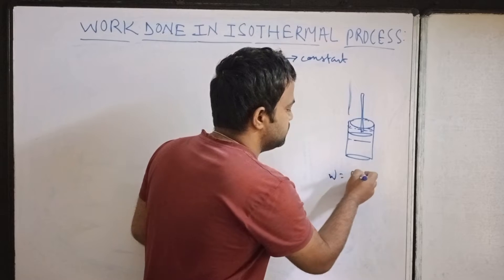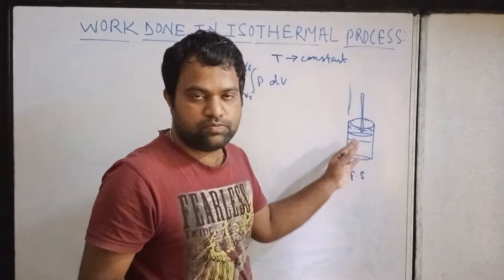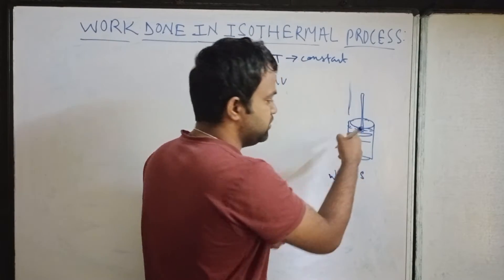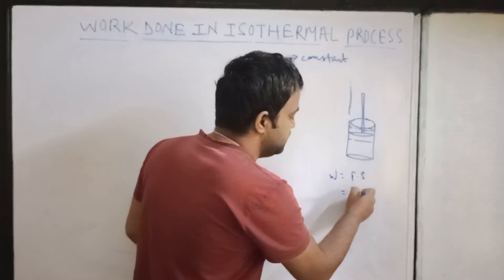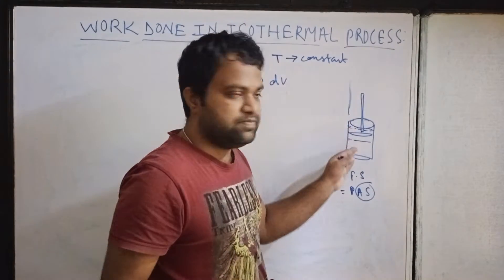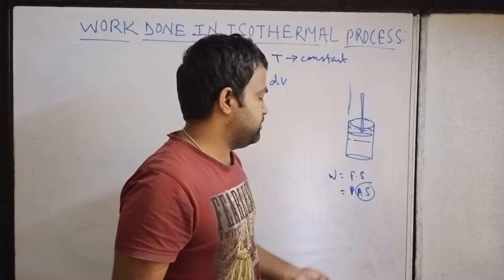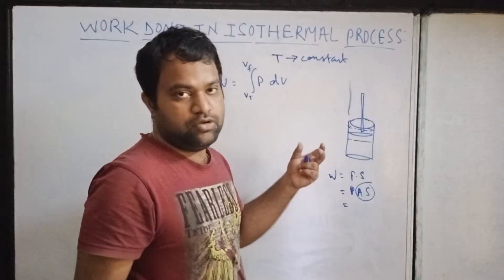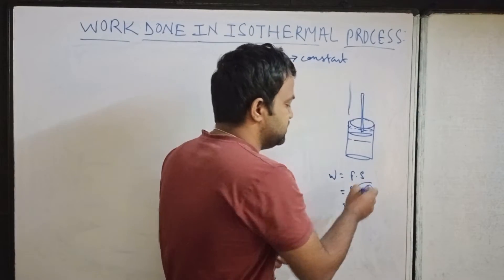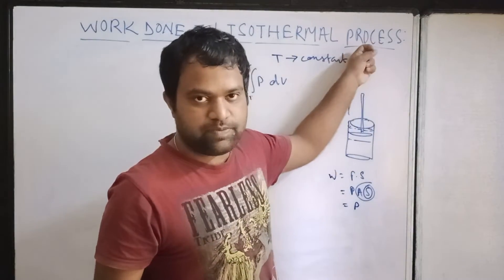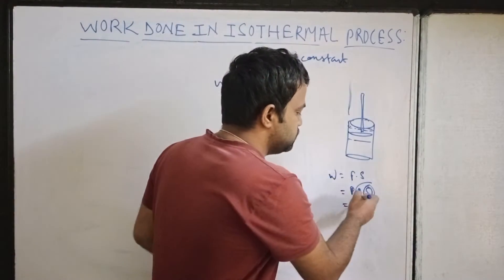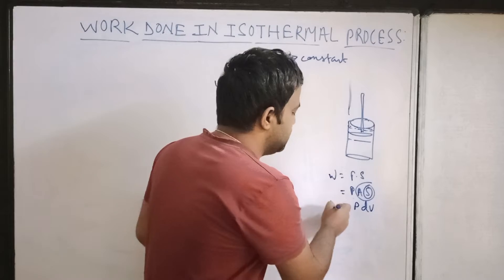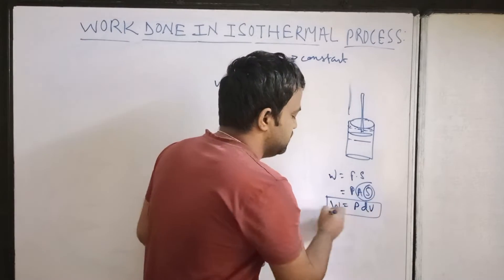Work done is equal to force into displacement. Here, force equals pressure times area, since we consider the area of the cross-section of the cylinder. So work done equals pressure times area times displacement. In a cylindrical system, area times displacement equals volume. Since the length is changing as we compress or expand, the volume changes, so P dV is your work done.